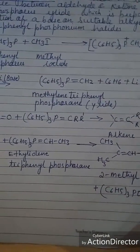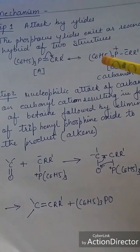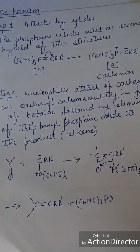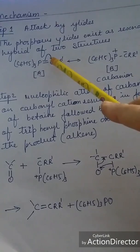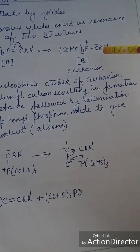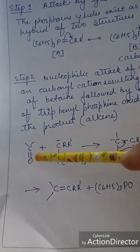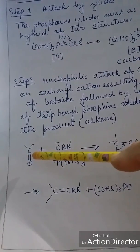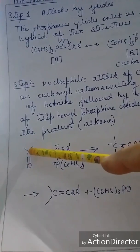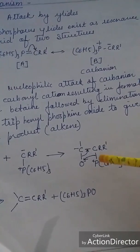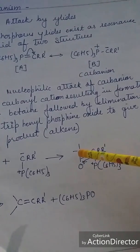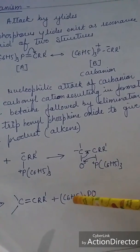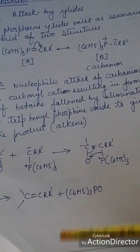The mechanism of the Wittig reaction occurs in two steps. First is the nucleophilic attack: the phosphorane acts as a resonance hybrid of two structures, and the carbanion attacks the carbonyl carbon, forming an intermediate called a betaine. In the second step, a rearrangement occurs to form a four-membered ring intermediate (oxaphosphetane), which then decomposes to give the alkene product and triphenylphosphine oxide.